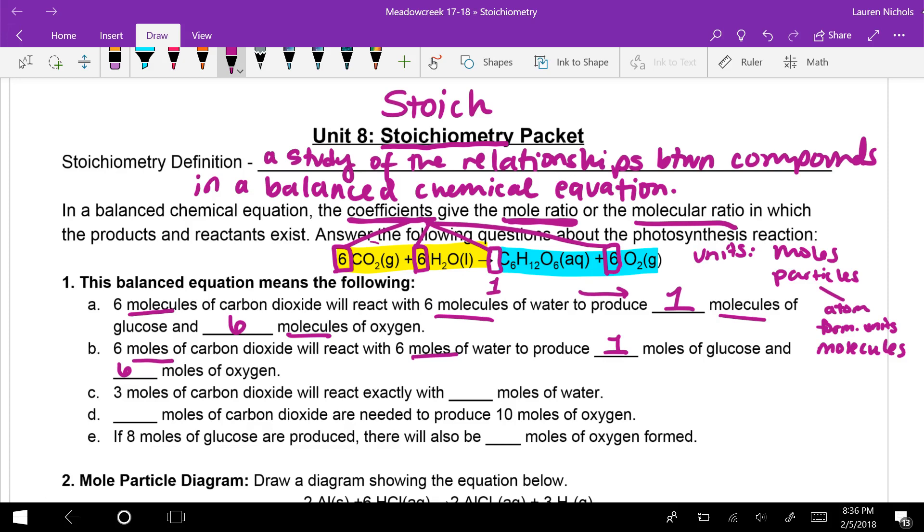Now for C, it says three moles of carbon dioxide will react exactly with blank moles of water. So in our equation, we know that six moles react with six moles of water. So that means if I have three moles of carbon dioxide, it's going to react exactly with three moles of water. And if we look at D, it says blank moles of carbon dioxide are needed to produce 10 moles of oxygen. Well, if six moles of oxygen are produced from six moles of carbon dioxide, then 10 moles of oxygen must be produced from 10 moles of carbon dioxide.